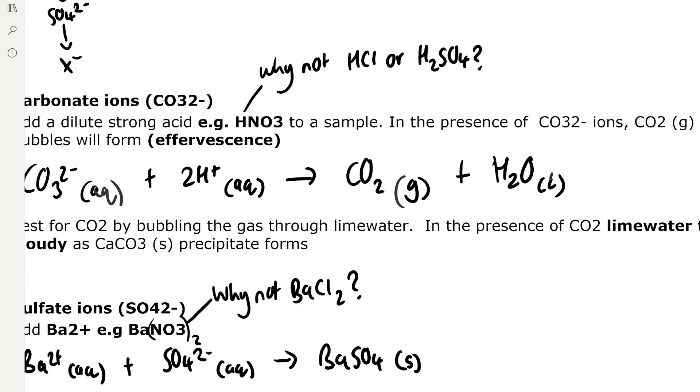We can't use HCl or H2SO4 or barium chloride because these would add chloride ions for HCl and barium chloride. In the case of sulfuric acid it would add sulphate ions. This would lead to false positive tests as we'd be adding these ions into the samples that we're testing for. So we have to use barium nitrate and nitric acid.